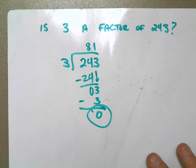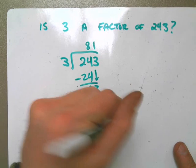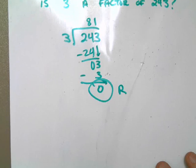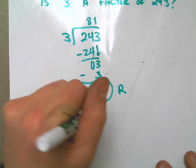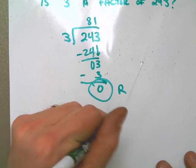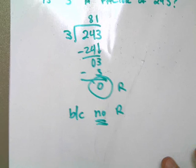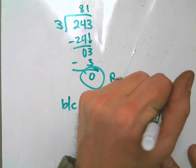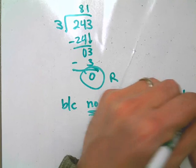And you would say, because there is no remainder, and by the way, this is the remainder, because there is no remainder, the remainder is 0, that means it is a factor. It goes into it cleanly.